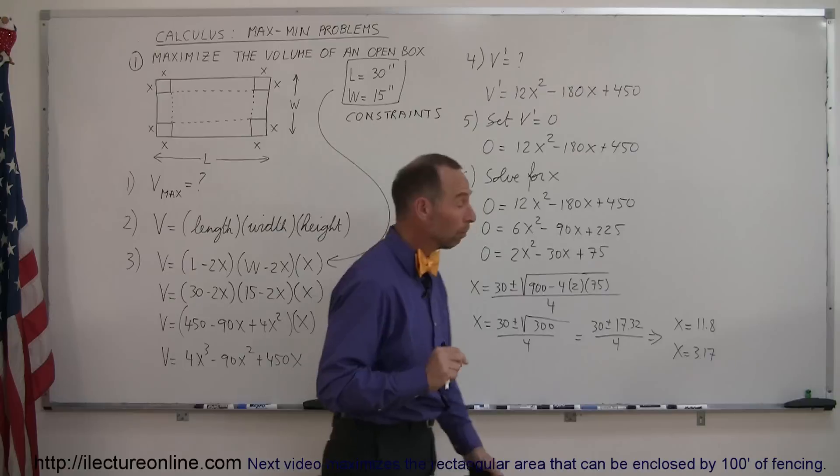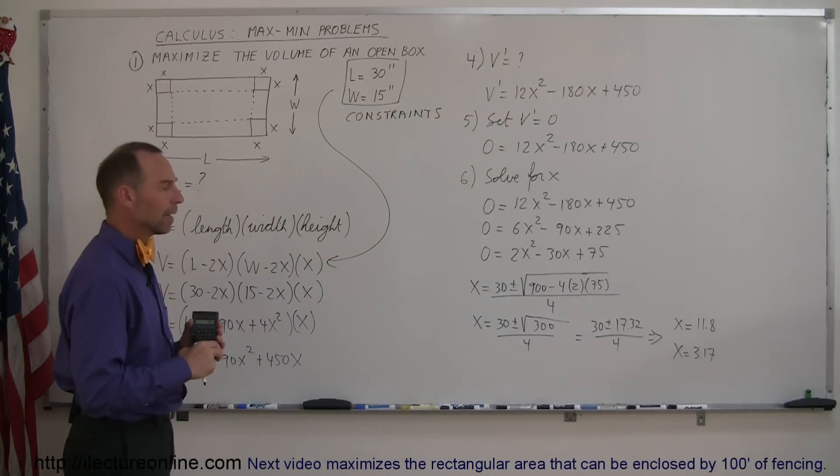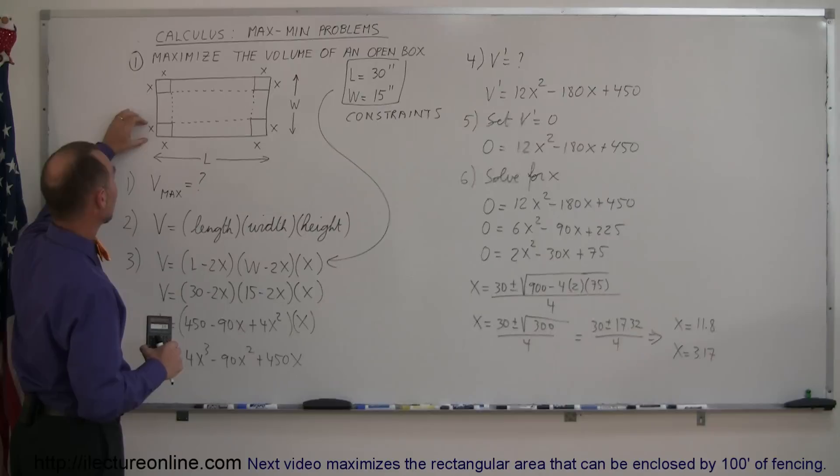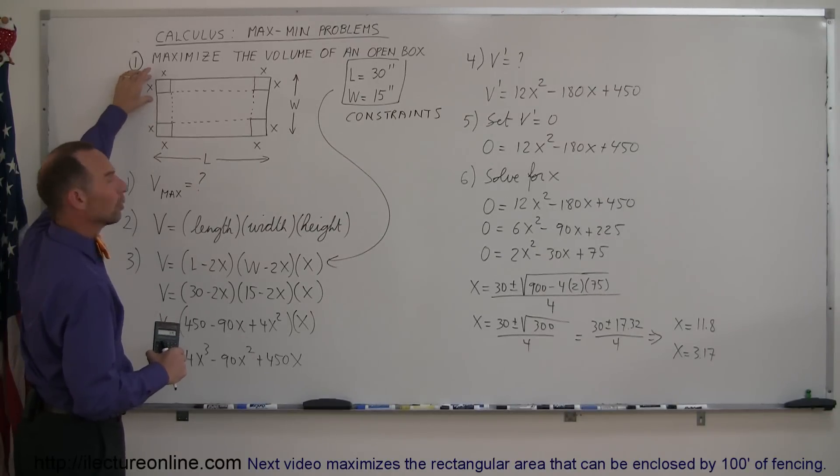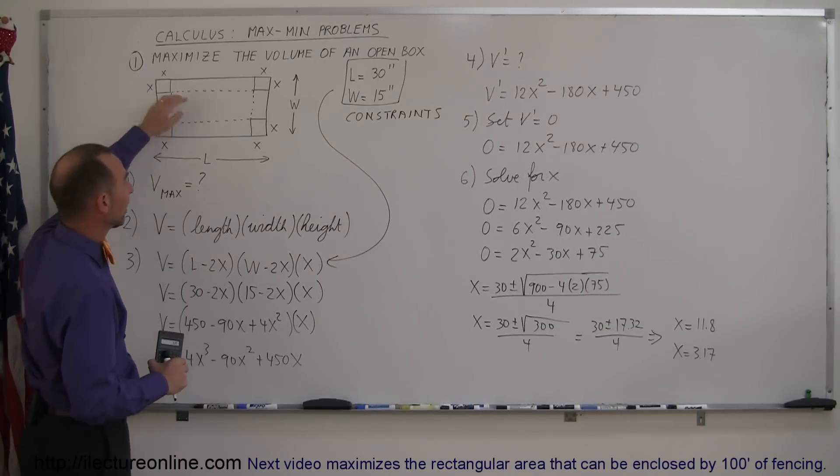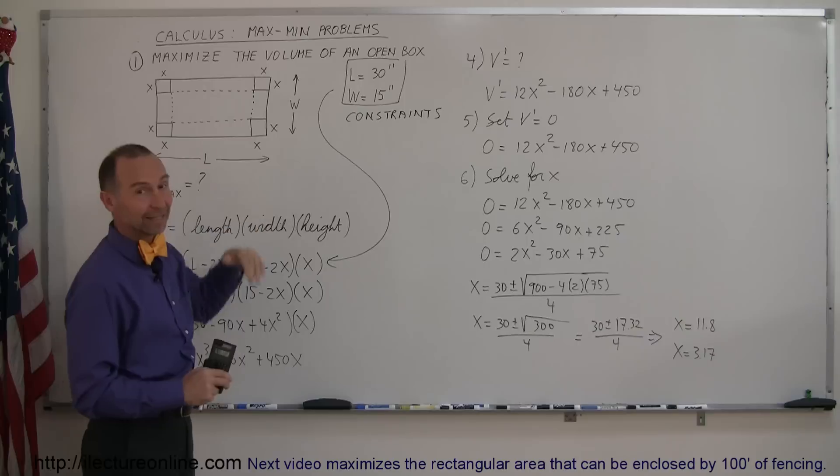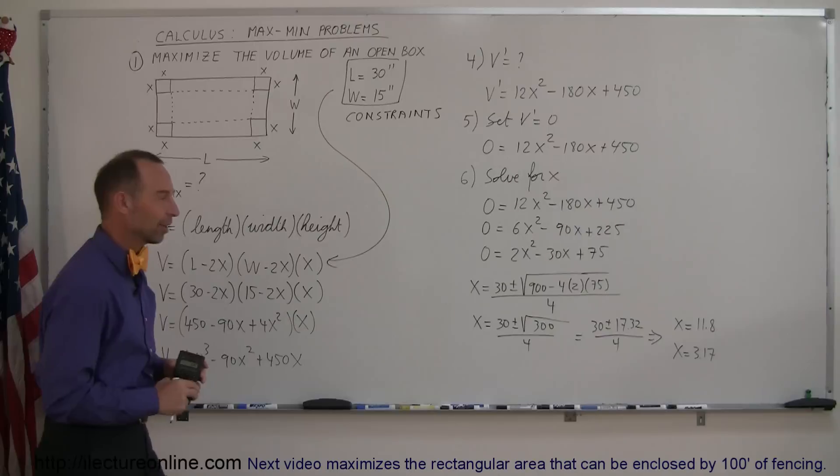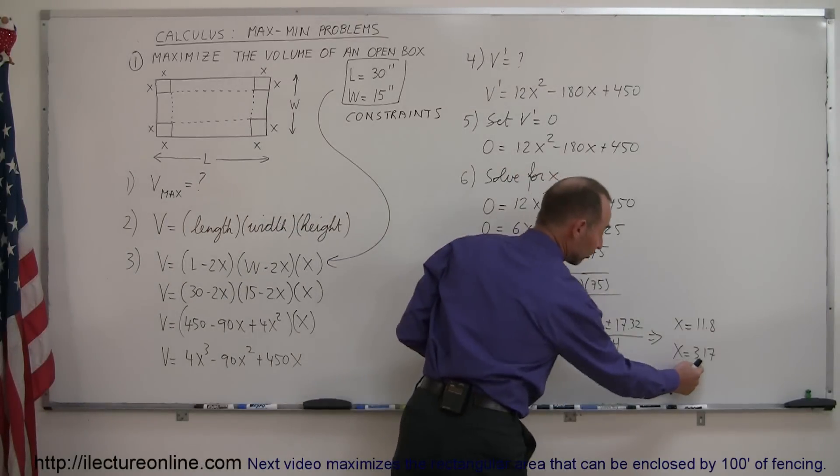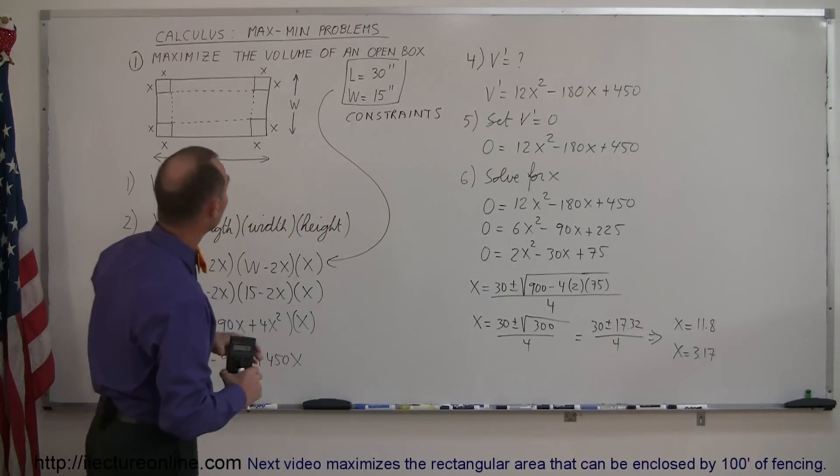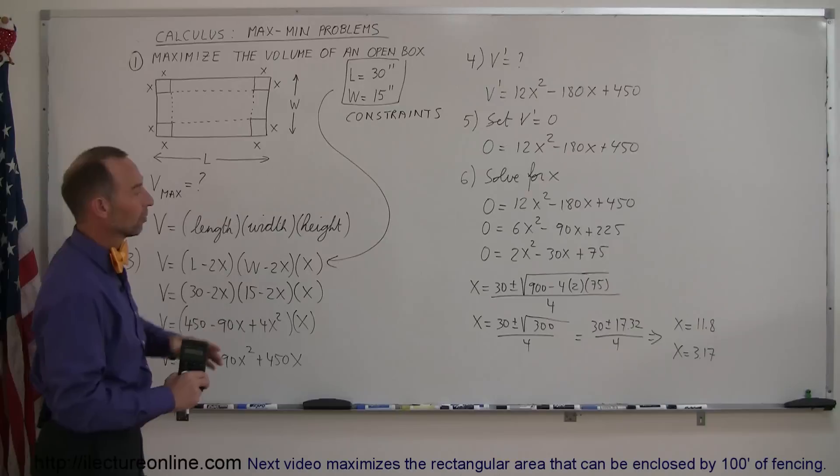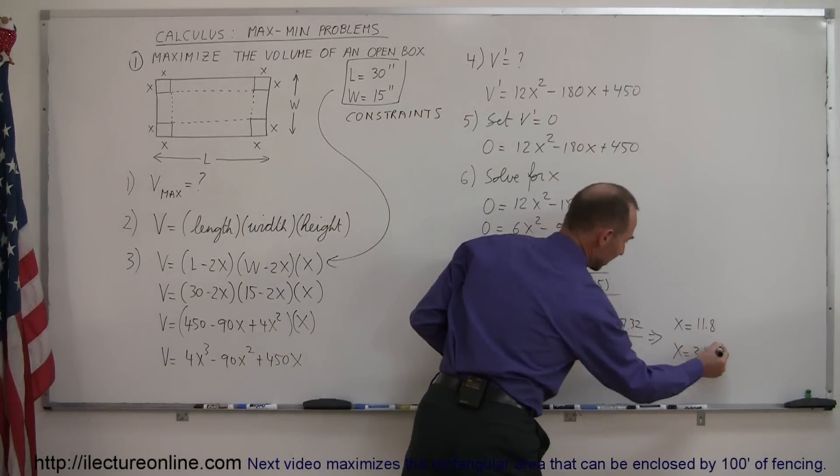So two mathematically possible answers, but are they realistic answers? Let's take the first one, x equals 11.8. If I let x equal 11.8, well, this is 11.8 then, and this is 11.8, together it's more than 20 inches. And since the width is only 15, there's no way you can cut out that big a piece and still have any cardboard left. So that's not a plausible answer. What about the second answer, 3.17? That seems plausible because 3.17 plus 3.17 is definitely less than 15, so it looks like this is the answer.